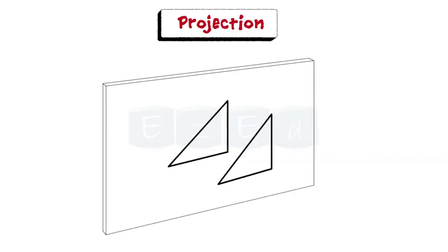For orthographic projection, we draw straight lines from the outer edges of the object, which are always perpendicular to the screen, so that we get the exact size of the object. This is called orthographic projection.